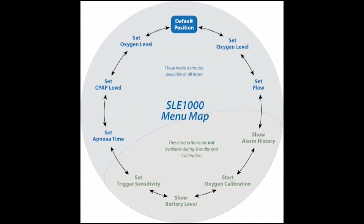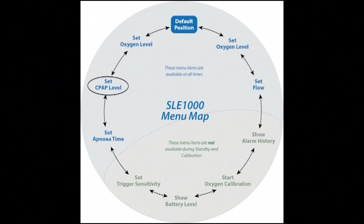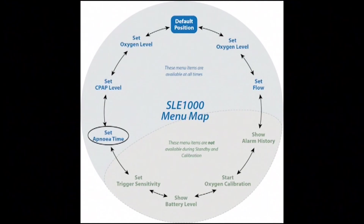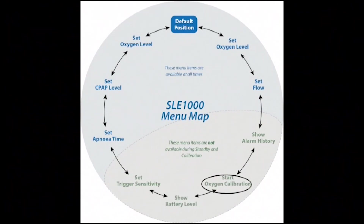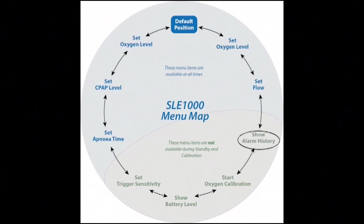Once the main parameters have been set, further messages can be accessed by rotating the wheel in anti-clockwise order: set oxygen level, set CPAP level, set apnea time, set trigger sensitivity, show battery level, start O2 calibration, show alarm history, and set flow.